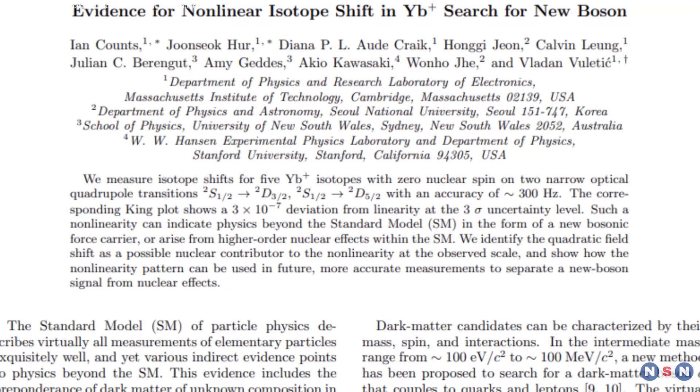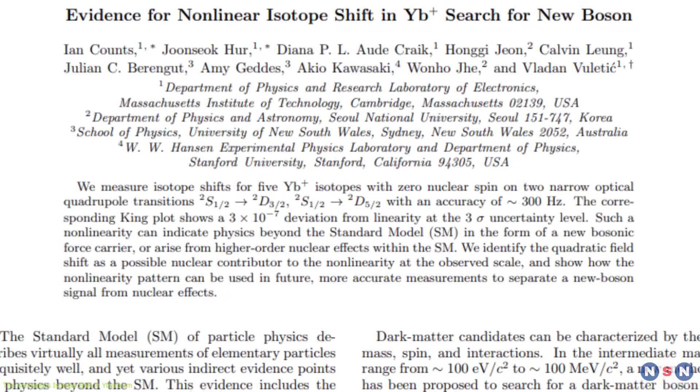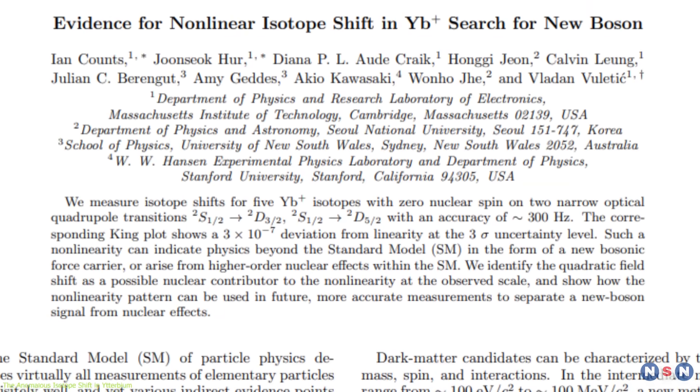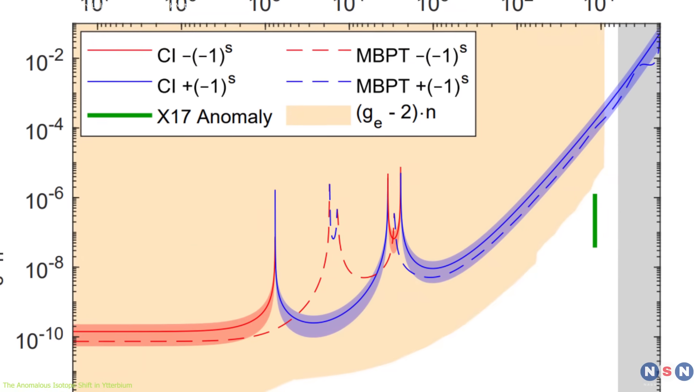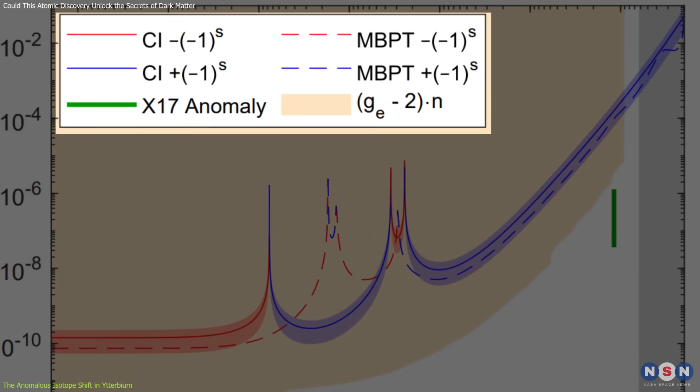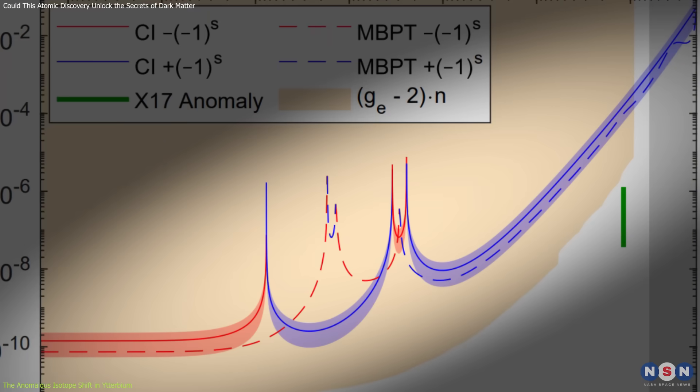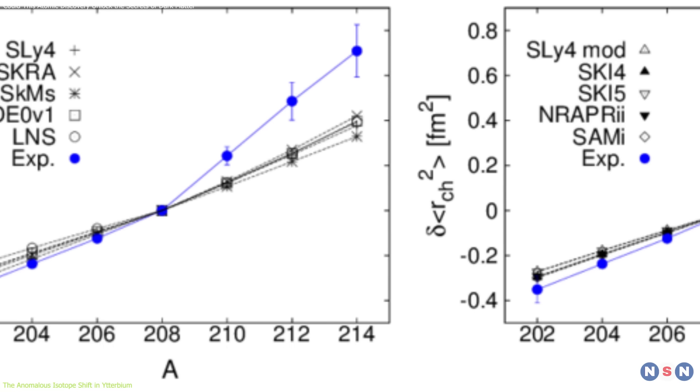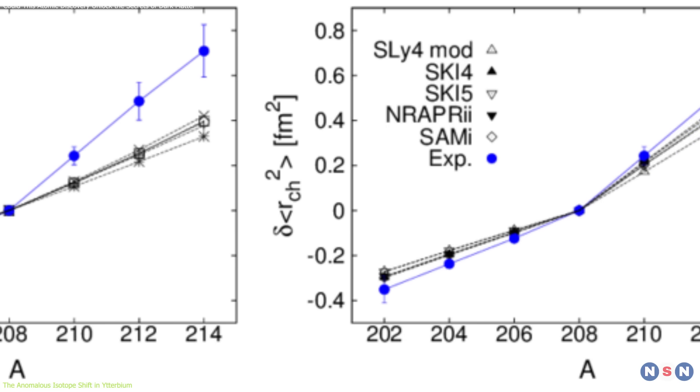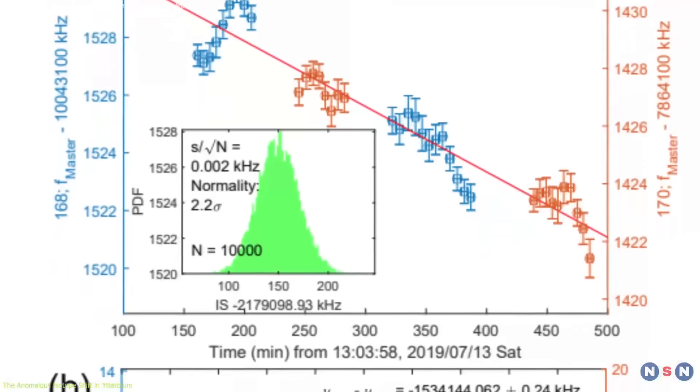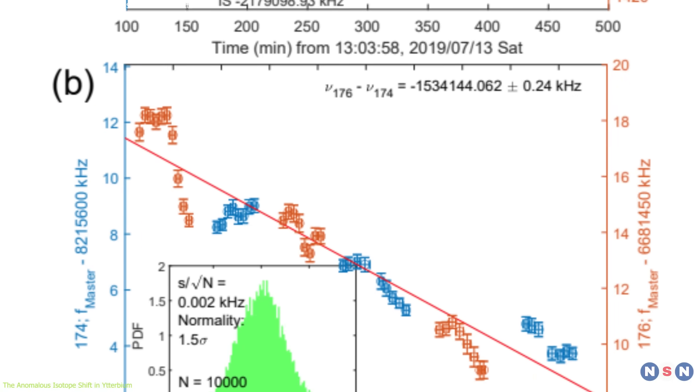In 2020, scientists at MIT observed something confusing while measuring the isotope shifts of ytterbium. Isotope shifts occur when different versions of an element, those with different numbers of neutrons, show slight variations in their atomic spectra. Normally, these shifts follow a predictable linear pattern based on known nuclear physics principles. However, ytterbium's isotope shifts did not follow this pattern.